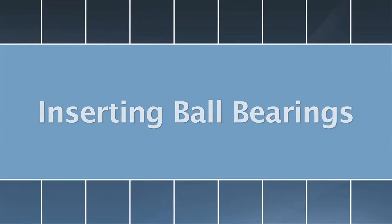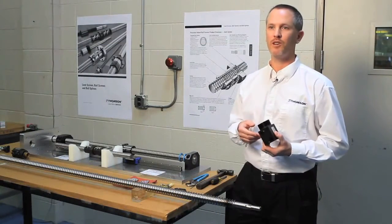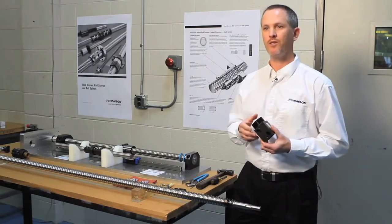Not very uncommon that the ball bearings will fall out. One possible solution is to send it back to Thomson, and we can reload it here at the factory, or you can do it in your facility on the screw itself.